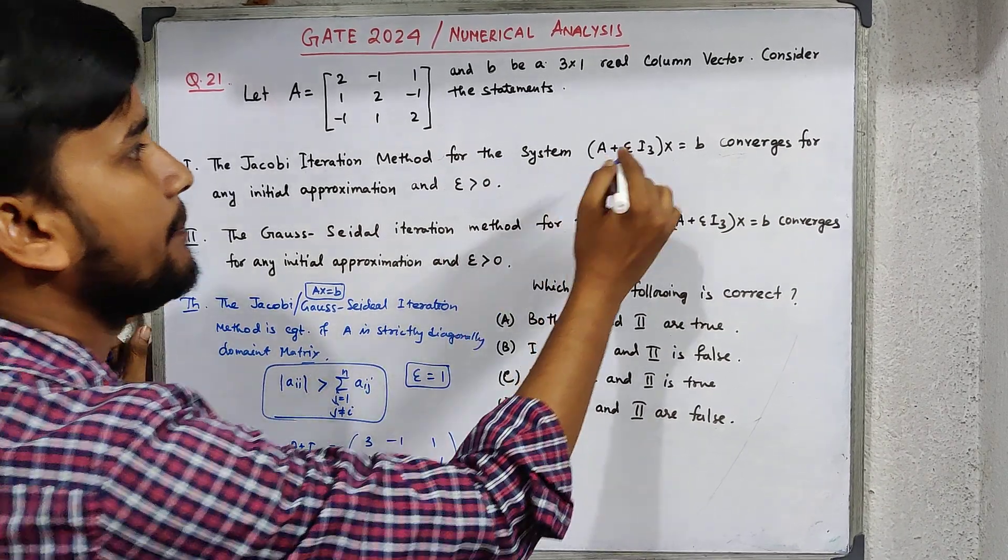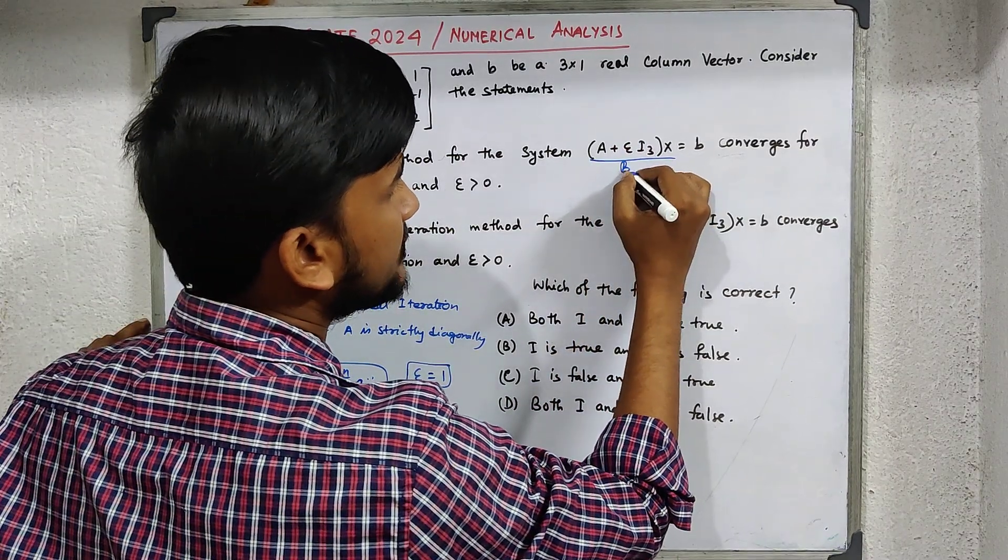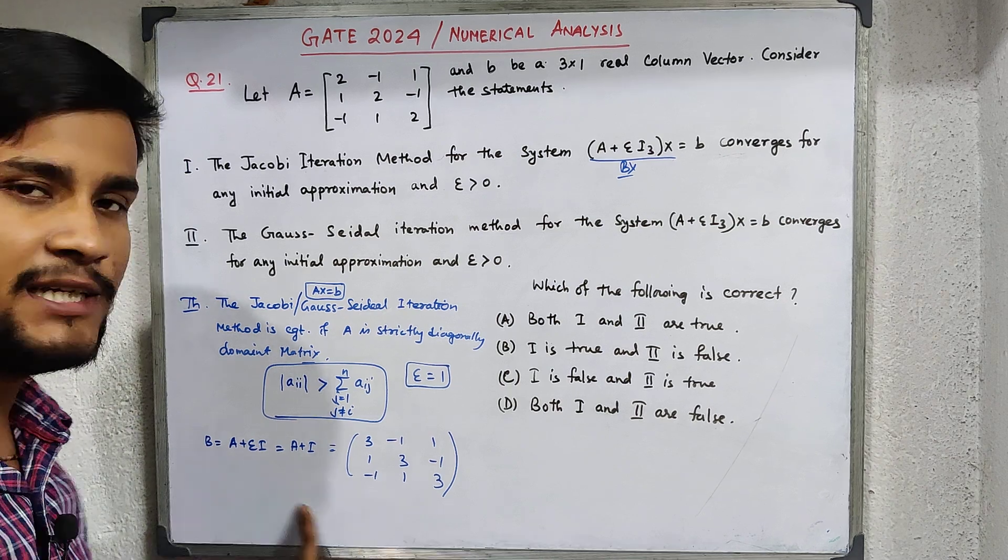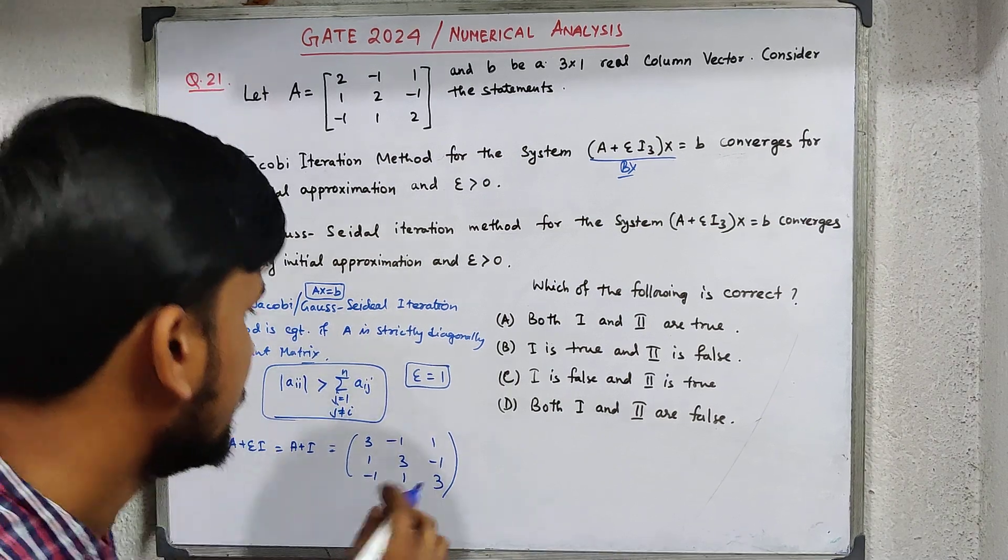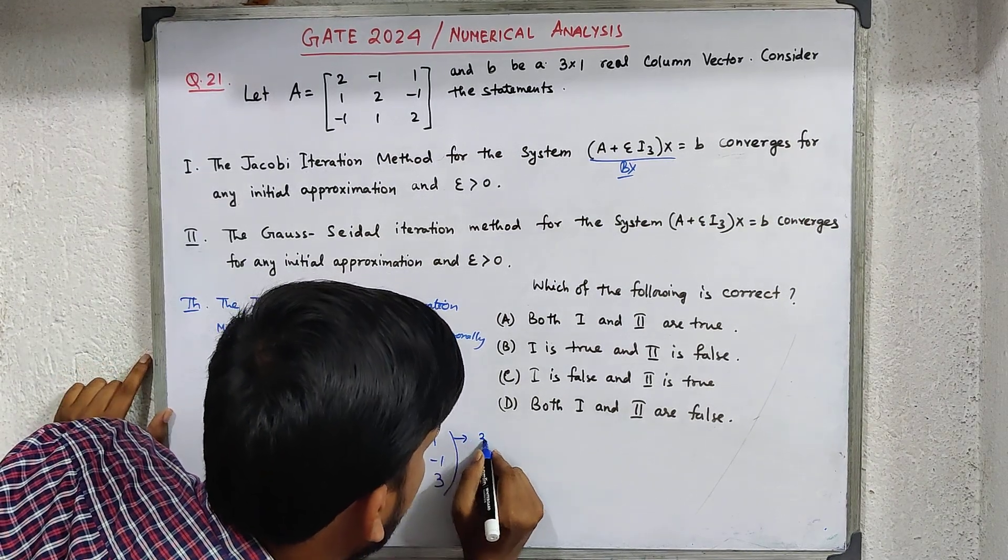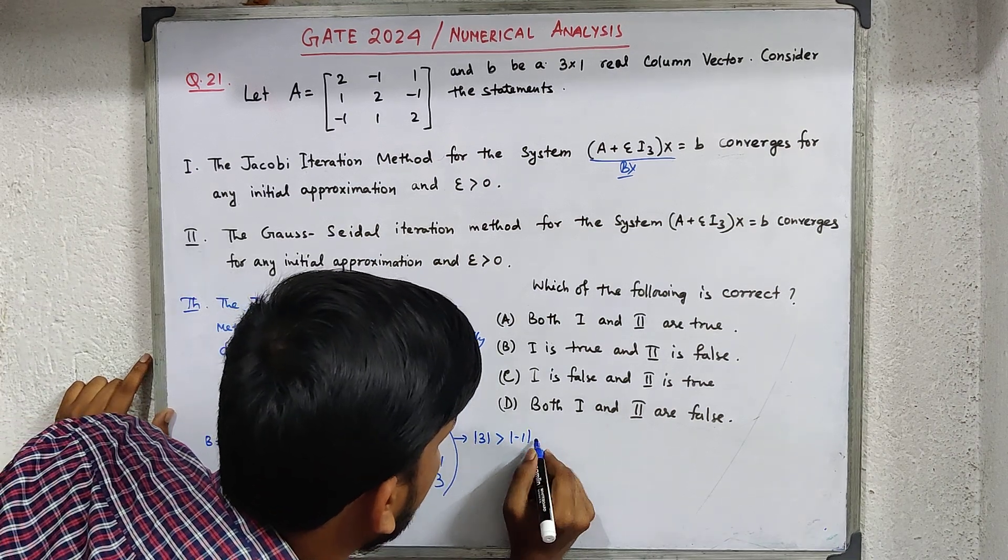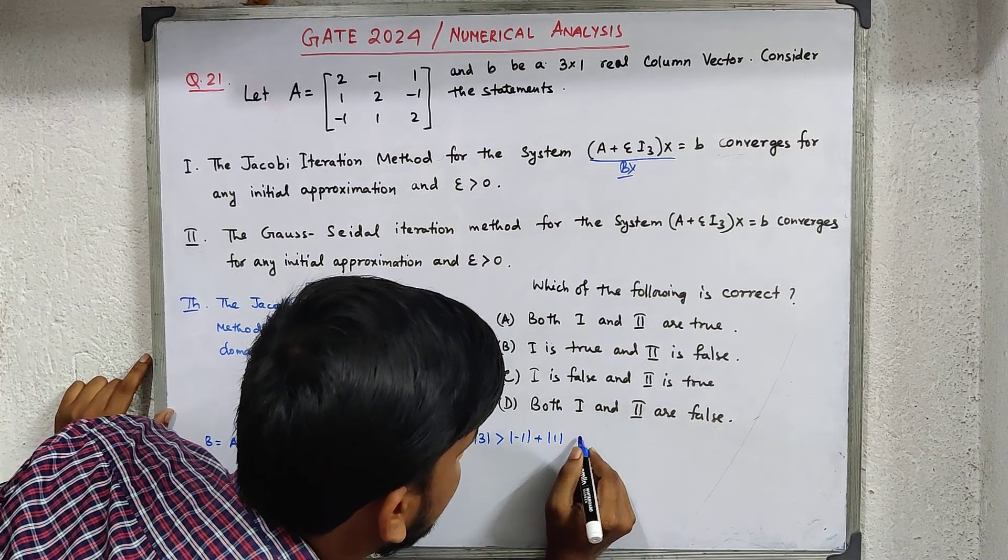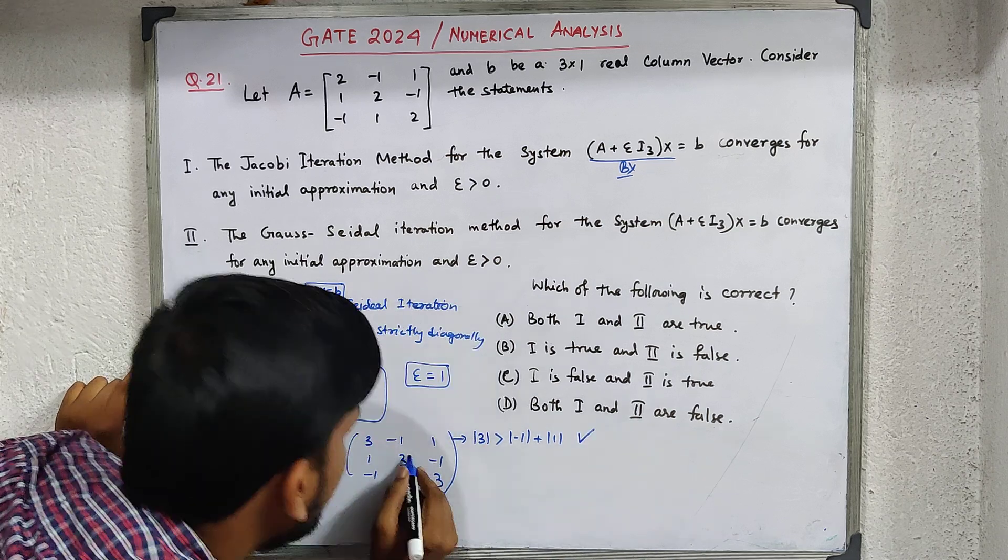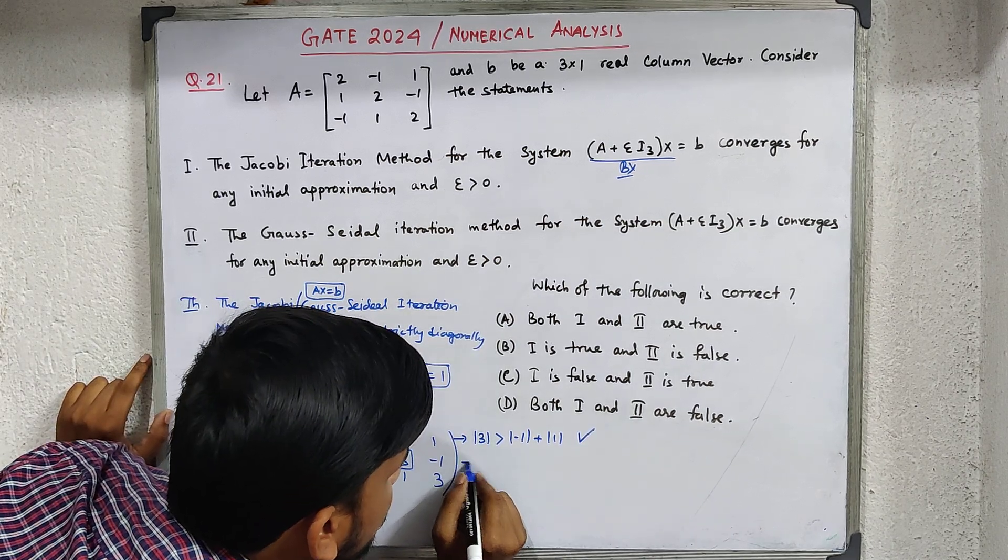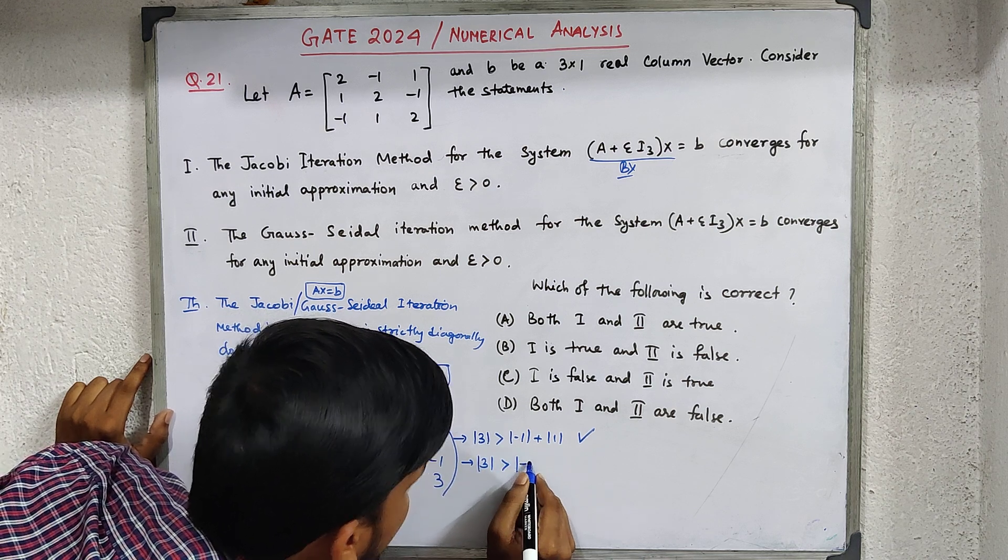We have to check if B is strictly diagonally-dominant. For the first row, |3| is greater than |-1|+|1|, which is 3>2, yes this is true. For the second element, the diagonal element, |3| is greater than |1|+|-1|, yes this is also true.